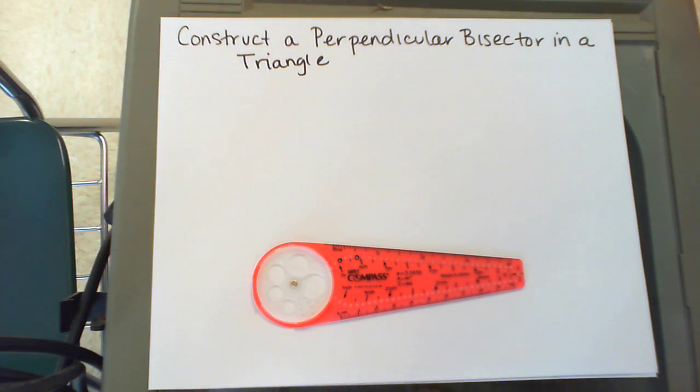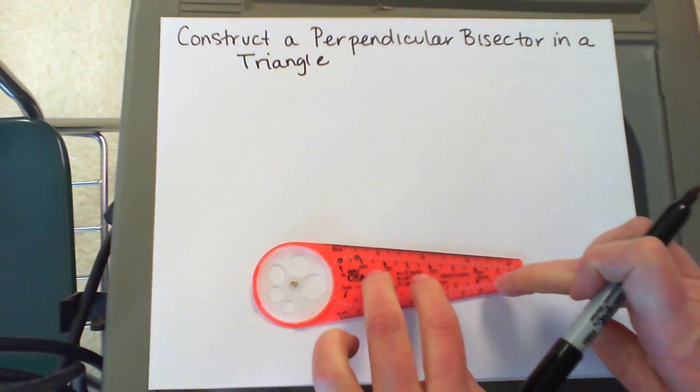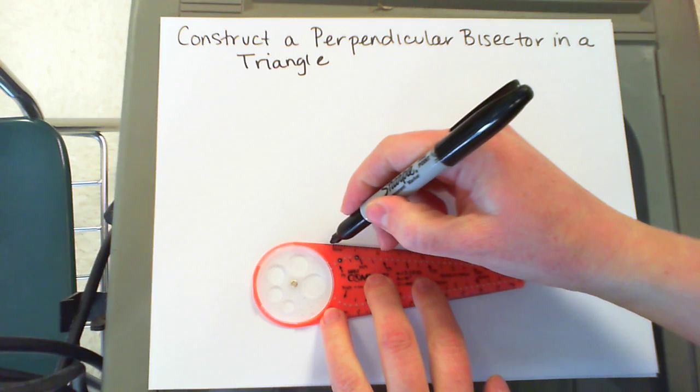I'm going to show you how to construct a perpendicular bisector in a triangle. First, I need to start with a triangle using my straightedge.